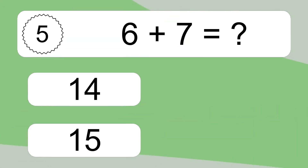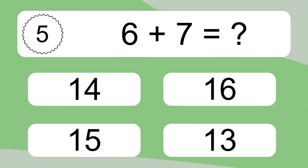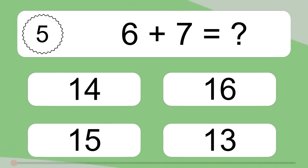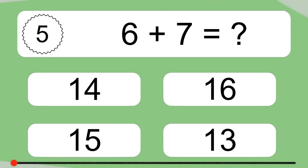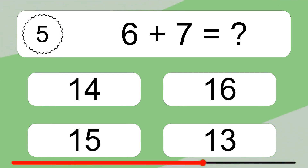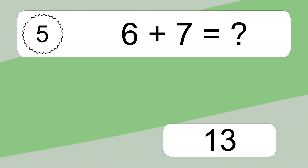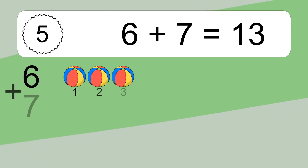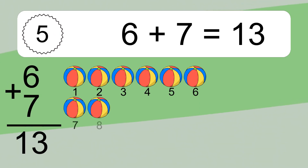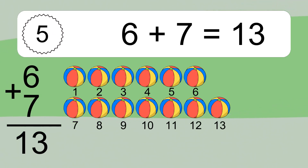6 plus 7 equals what? 6 plus 7 equals 13.